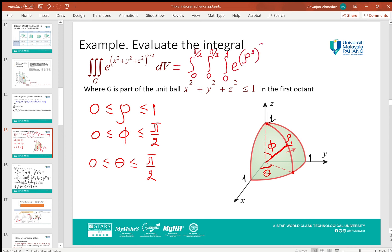z with their spherical values, and multiply by the Jacobian, which is ρ² sin φ. So we arrive at the triple iterated integrals in spherical coordinates.